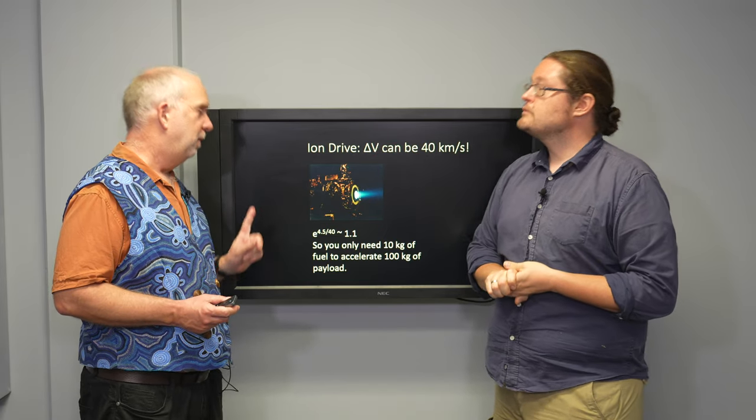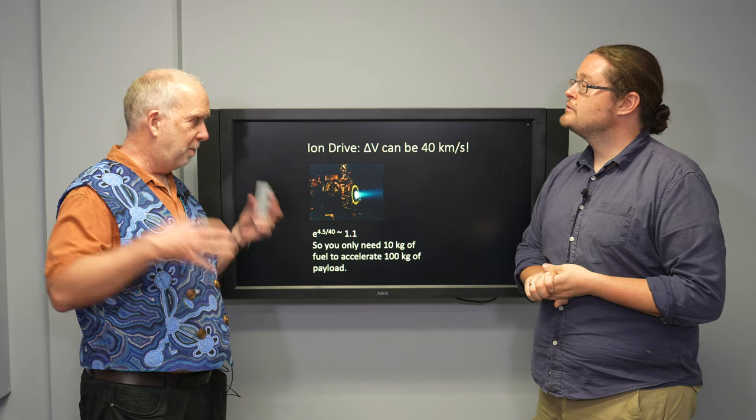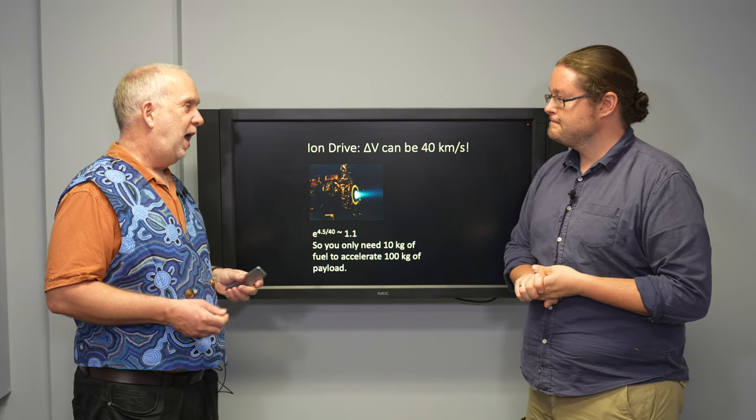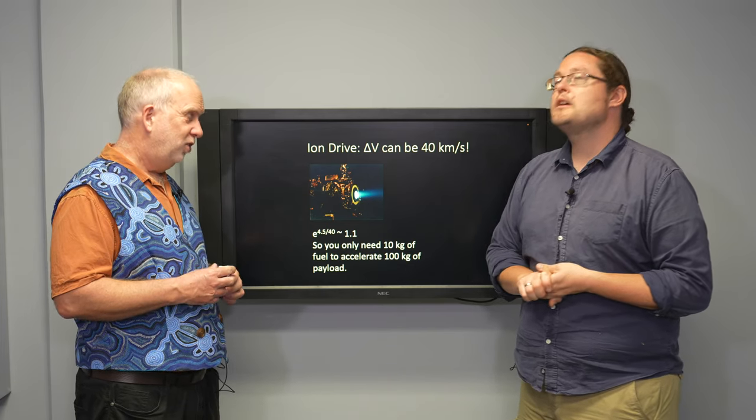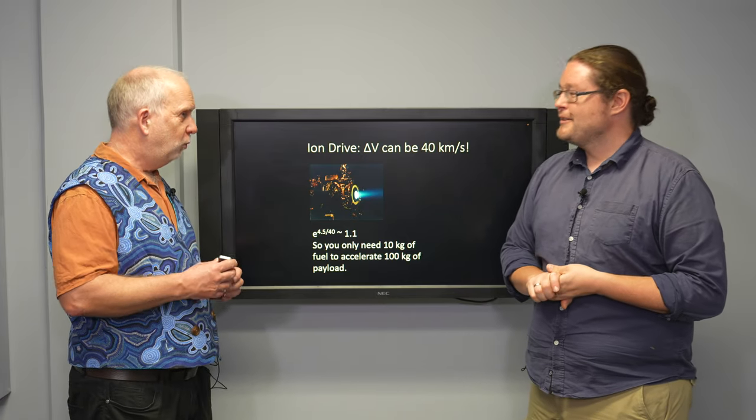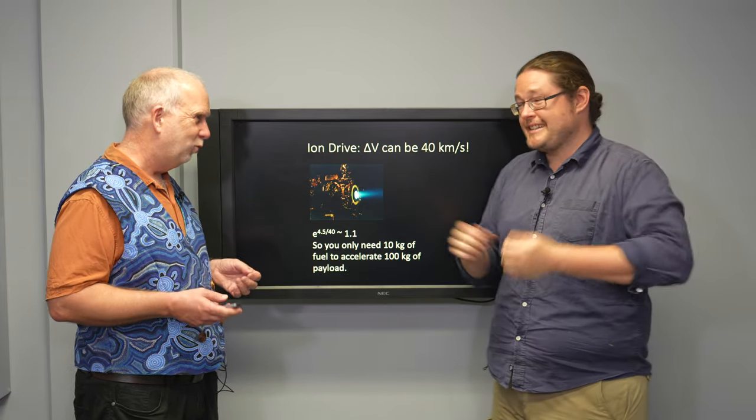The ion drive won't get there faster, but ion drives, remember, they're powered by the Sun and they have very low thrust. So you can't use them to take off from the Earth's surface, but once you're still going to have to use a standard chemical stuff for that.